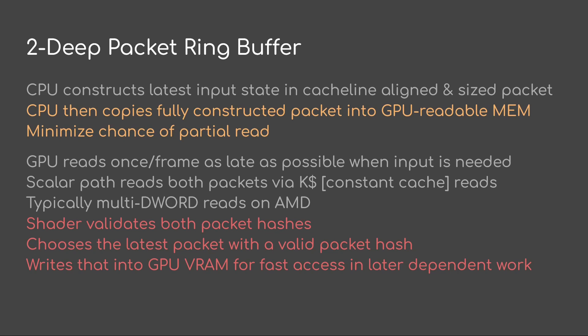Typically this is done with a multi-DWORD read on AMD. Then the shader is going to validate that both packet hashes are good, and then it's going to choose the latest packet with a valid packet hash. Afterwards it's going to write that into GPU VRAM for fast access in later dependent work on the GPU.